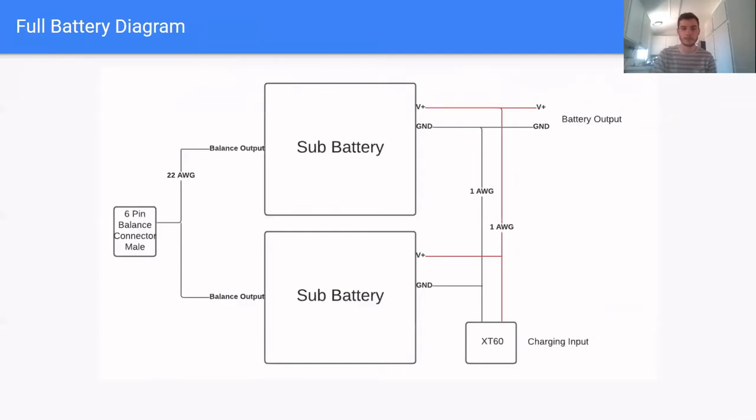Looking at the full battery diagram, we can see that the two sub-batteries are connected in parallel, the balance outputs are connected in parallel, and that will be used for charging. On the right, the battery output goes to the main module, and the charging input goes to the exterior of the chassis. We use one AWG wire because the motors could end up pulling around 130 amps, so we need really thick wire. Our current solution is to create a custom harness connecting these batteries, but we are looking into high-amp battery buses, which would make the manufacturing easier.